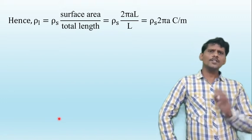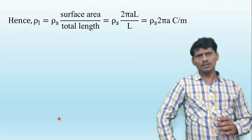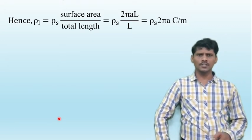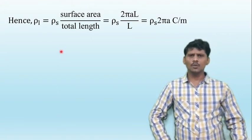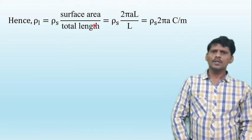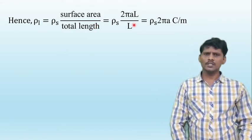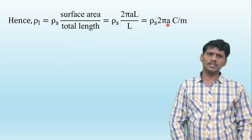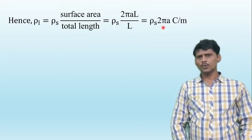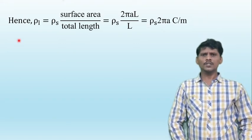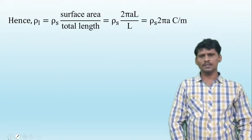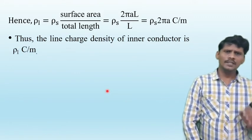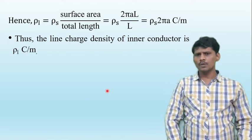The relationship between line charge density and surface charge density in this coaxial cable application is: line charge density rho_L equals rho_s times surface area divided by total length, which equals rho_s times 2πaL divided by L, giving rho_L equals rho_s times 2πa. Thus the line charge density of the inner conductor is rho_L coulombs per meter.